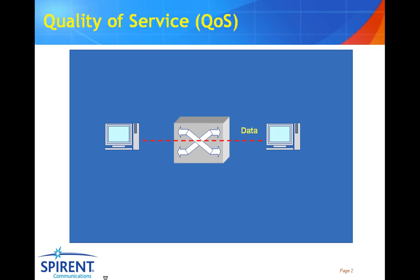Quality of service in the modern IP network is increasingly important. A few years ago, when we were only transporting data across our networks, quality of service wasn't quite as important as it is today. When we were moving data files across the network or email traffic, whether that traffic took 50 milliseconds, 500 milliseconds, or perhaps even a full second, most of us wouldn't have been too aware. But in today's modern network with applications such as voice over IP, the rapid delivery of good quality traffic is becoming increasingly important.